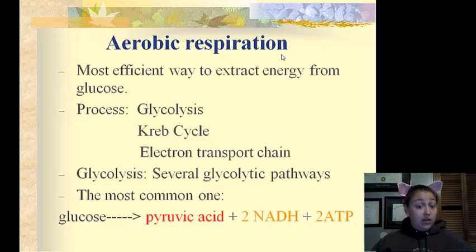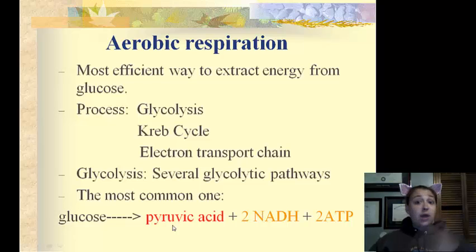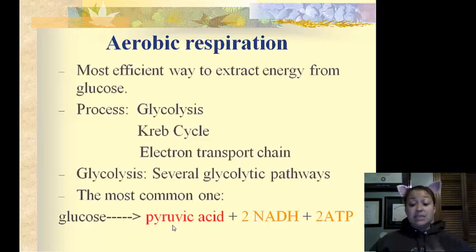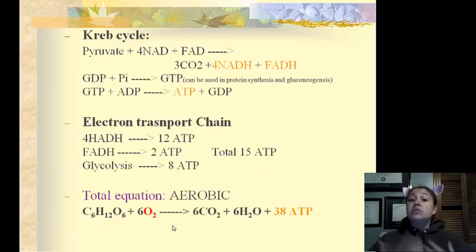Glycolysis can be done in several ways, but I want you to know this most common way here at the bottom. Glucose is broken down into pyruvic acid, then two high-energy molecules — NADH and ATP. Those are then used for the Krebs cycle.